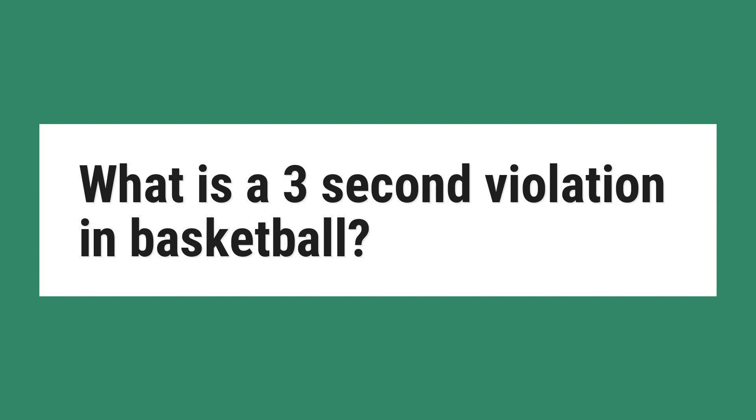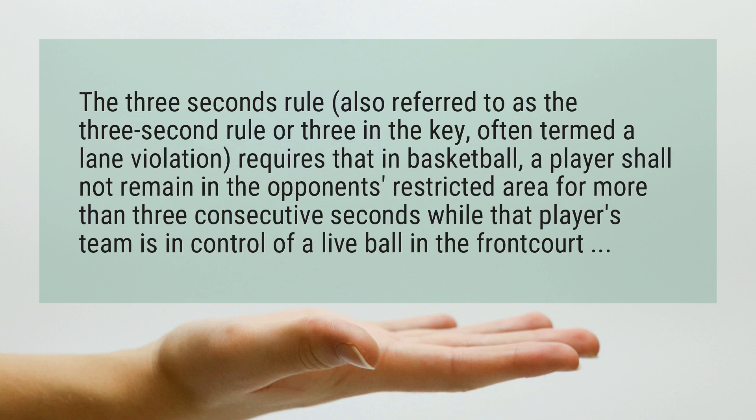What is a three-second violation in basketball? The three seconds rule, also referred to as the three-second rule or three in the key, often termed a lane violation, requires that in basketball a player shall not remain in the opponent's restricted area for more than three consecutive seconds while that player's team is in control of a live ball in the frontcourt.